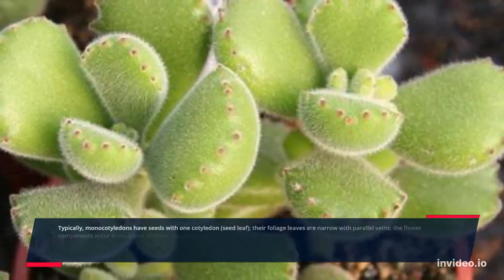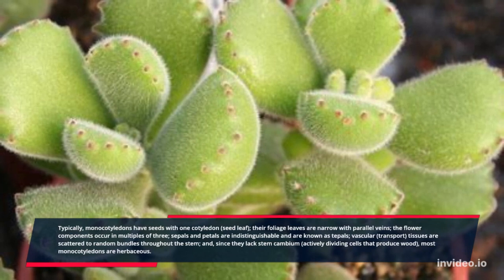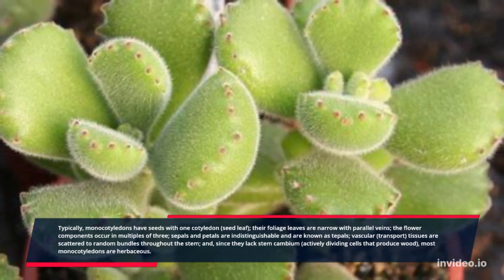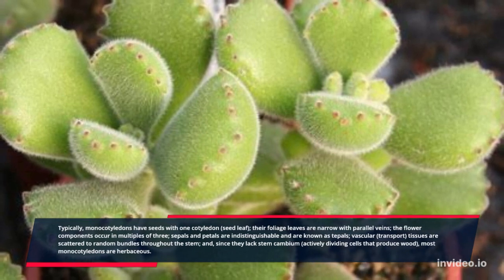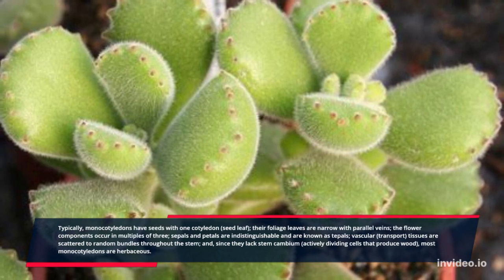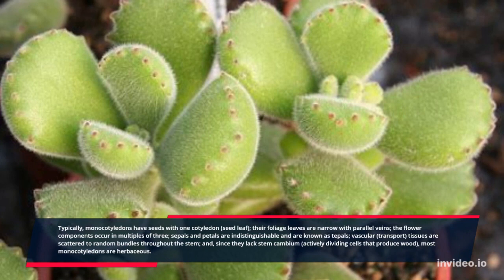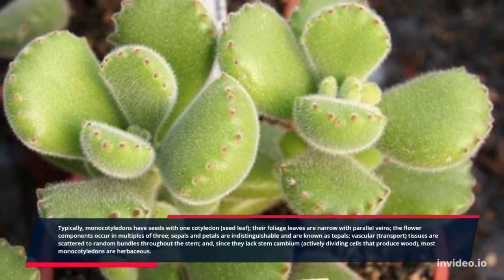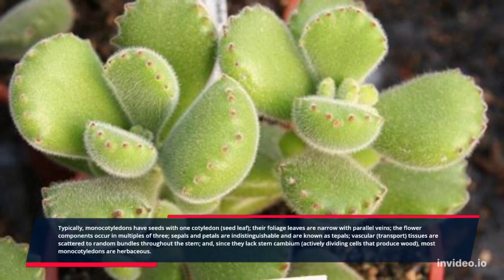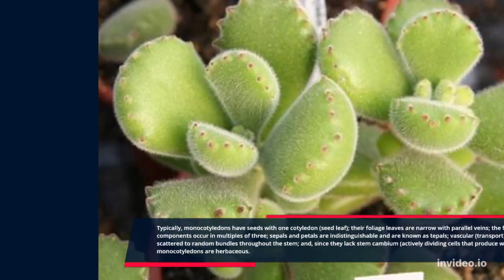Typically, monocotyledons have seeds with one cotyledon. Their foliage leaves are narrow with parallel veins. The flower components occur in multiples of three. Sepals and petals are indistinguishable and are known as tepals. Vascular transport tissues are scattered in random bundles throughout the stem. And, since they lack stem cambium — actively dividing cells that produce wood — most monocotyledons are herbaceous.